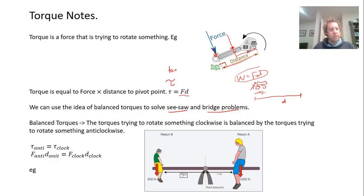Once we've got the torque formula, we use this idea of balanced torques. We take an object that's trying to rotate and look at the torques trying to rotate it clockwise. They're balanced out by the torques trying to rotate it anti-clockwise.